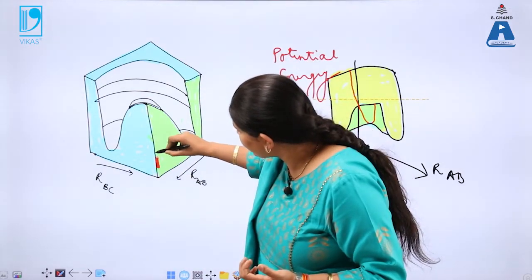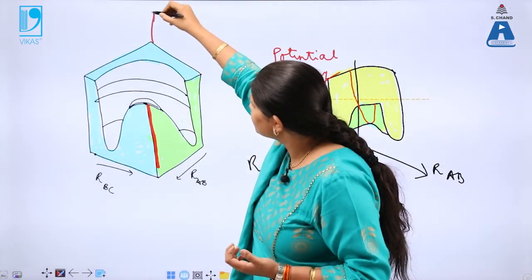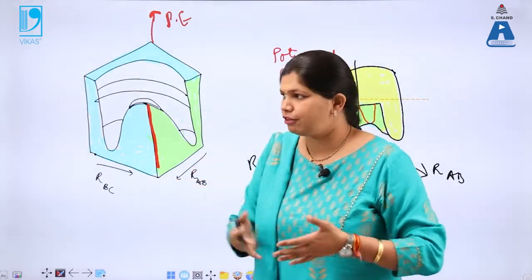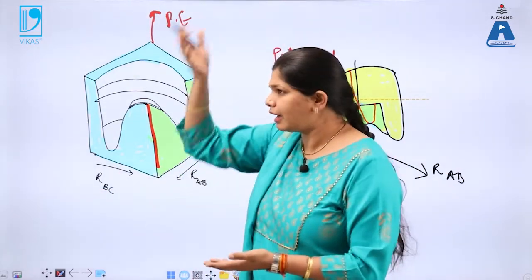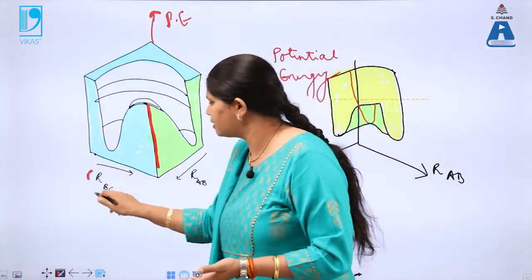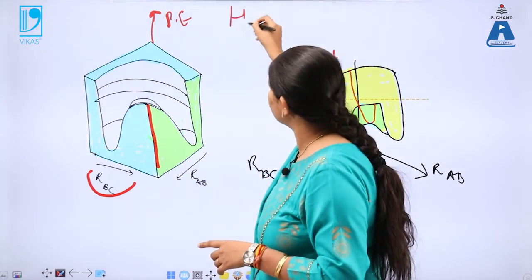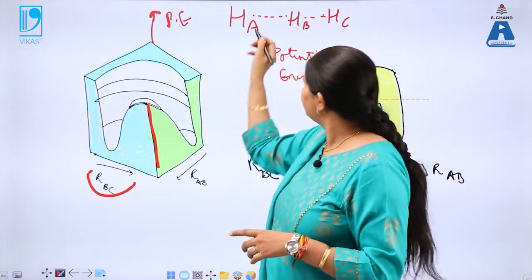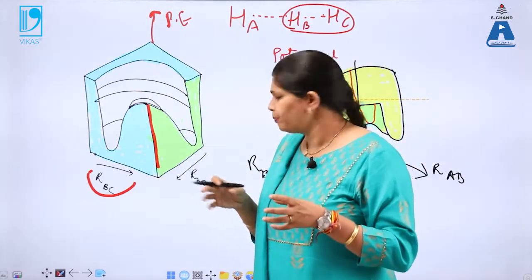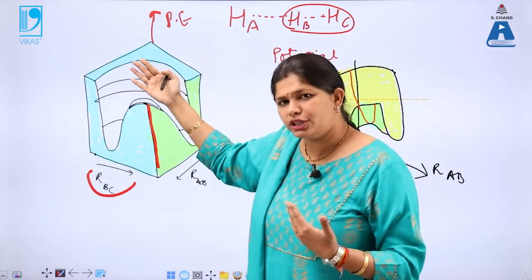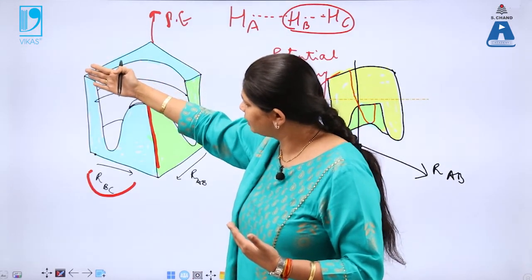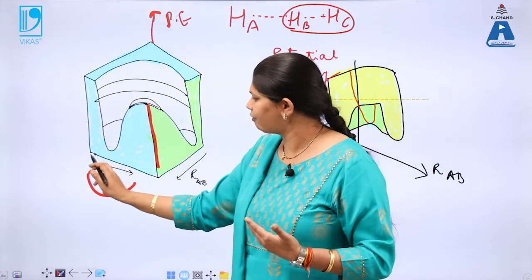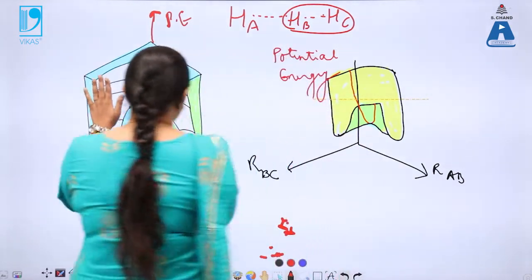The potential energy axis is one axis of a three-dimensional cube. Imagine you are in a room: the floor is your XY coordinate and the height is your potential energy. The XY coordinates are the bond distances — R_BC, the distance between atoms H_B and H_C, and R_AB, the distance between atoms A and B. In the Morse potential energy diagram, if you take a slice of the cube focusing on B and C, you see a Morse potential energy diagram, and similarly for A and B.